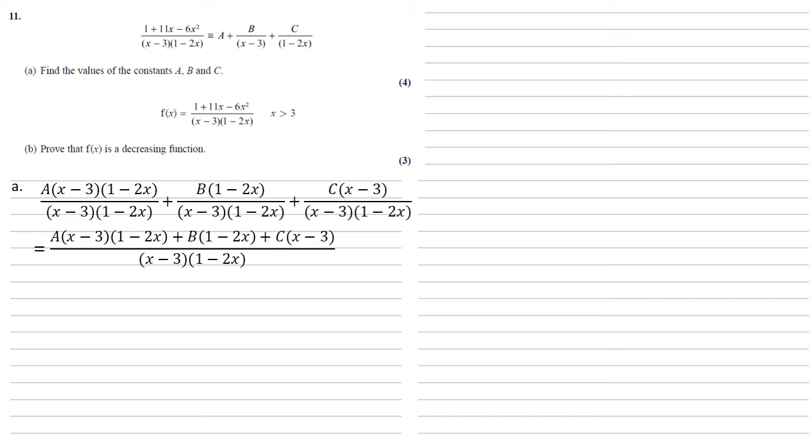Now we know that the top must be equal to the original numerator of 1 + 11x - 6x². We can use this to find a, b, and c. Firstly, by looking at the left we can see there's only one place where we're going to get x² to match up with the -6x² on the right, and that is with the a if we times the x and the -2x together when expanding those brackets. Multiplying them together would give us -2x² but we want -6, so a must be equal to 3.